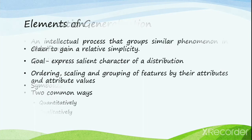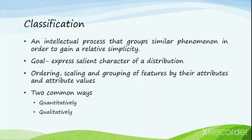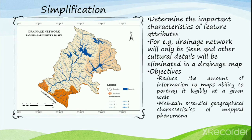Classification is an intellectual process that groups similar phenomena in order to gain relative simplicity. The goal of classification is to express the salient character of a distribution. Classification is the ordering, scaling, and grouping of features by their attributes and attribute values. There are two common ways a cartographer performs map classification: through a quantitative way and through a qualitative way.